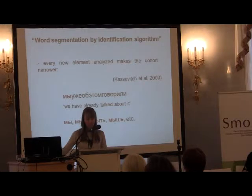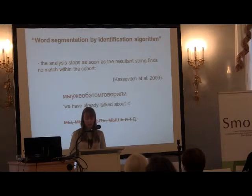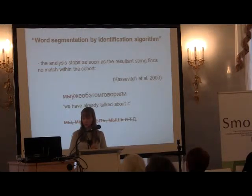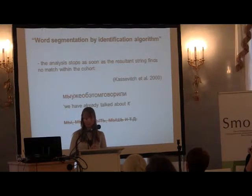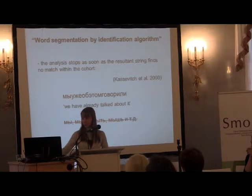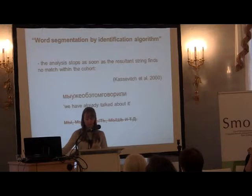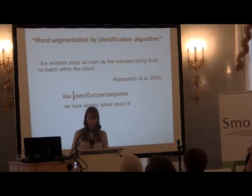The program keeps analyzing symbols so long as at least one word within the cohort can be taken as a match for the string formed in this way. The analysis stops and the word boundary is put before the last element analyzed as soon as the resultant string finds no match within the cohort. In this case, 'myu' is impossible in Russian inside a word, so we should put the boundary between the relevant elements.